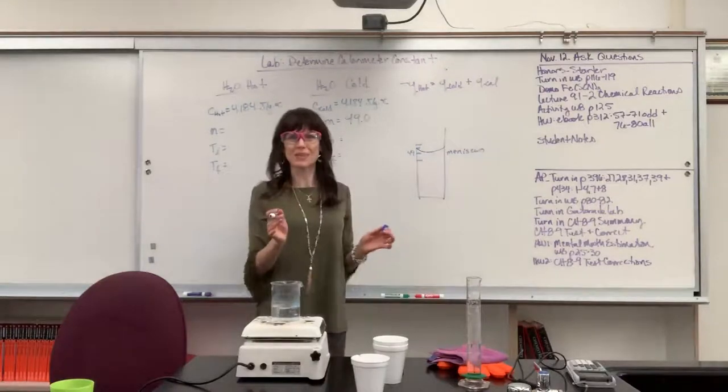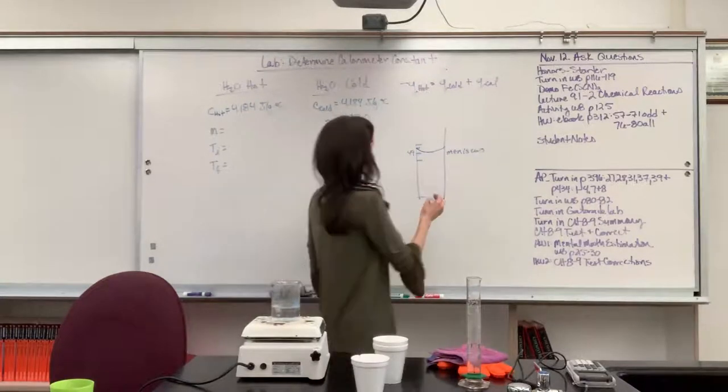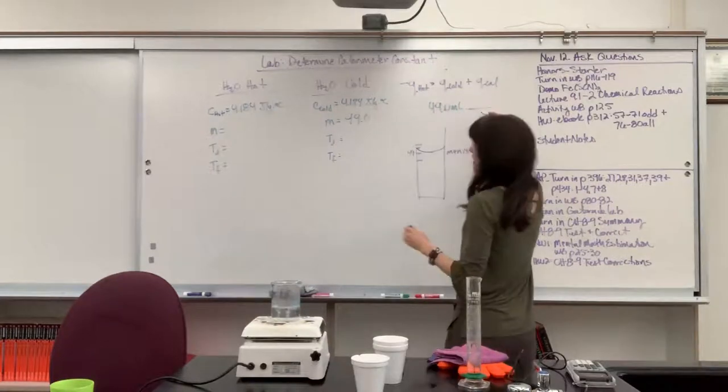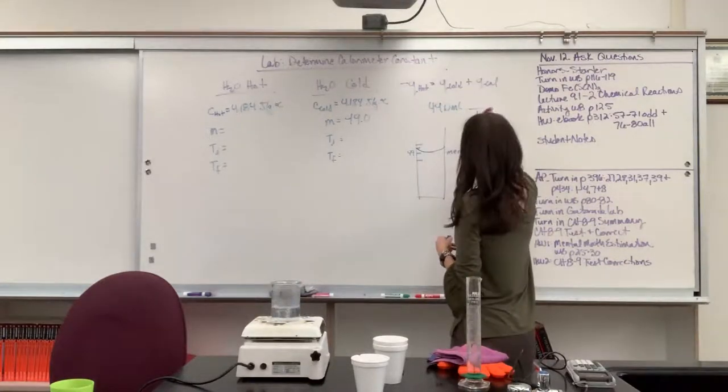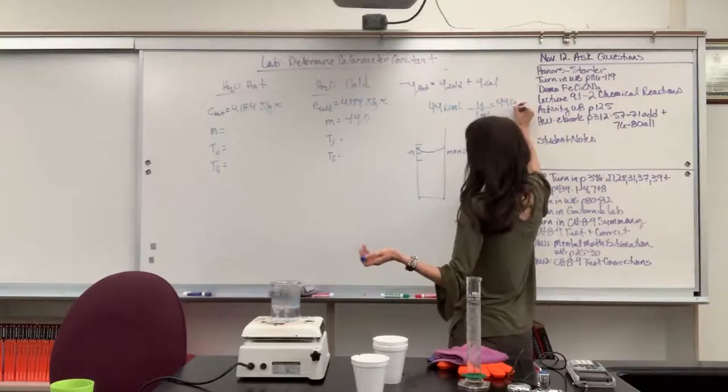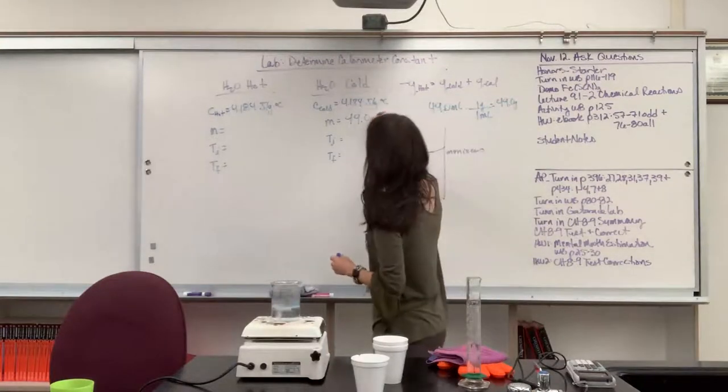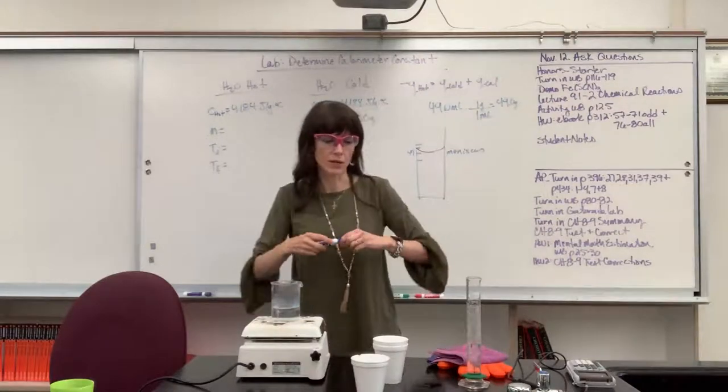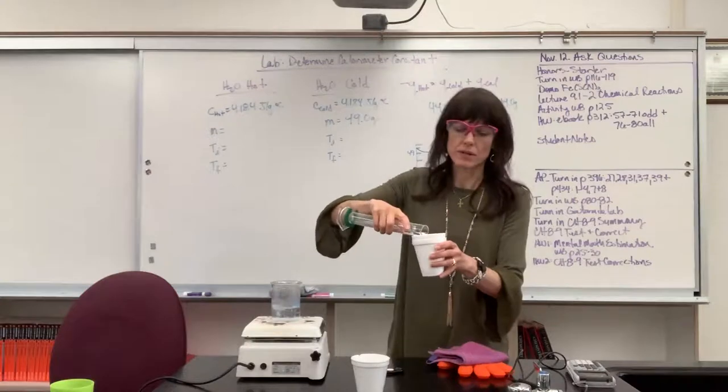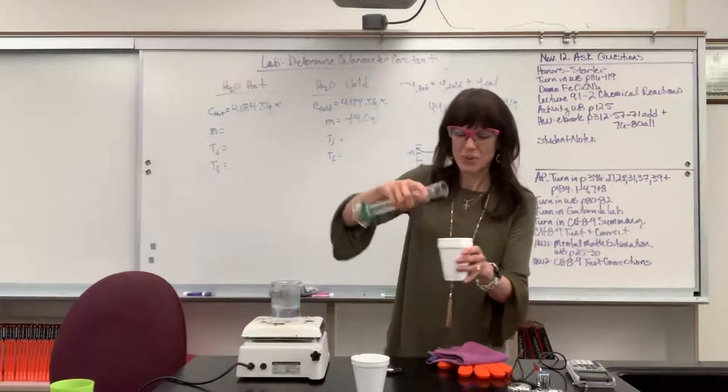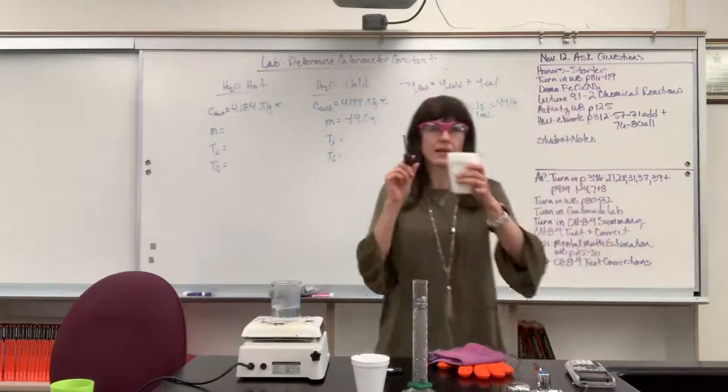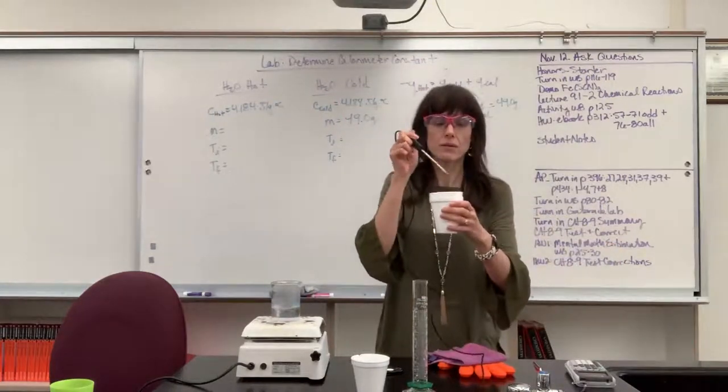Now remember, this is a trick we use in chemistry all the time. If I have 49 mils of water, the density of water is one mil for one gram. Which means I have 49 grams. Love that. We've got 49 grams of the cold water. So I'm going to pour this water, and this tap water is not truly cold. I'm going to pour this water into my calorimeter.